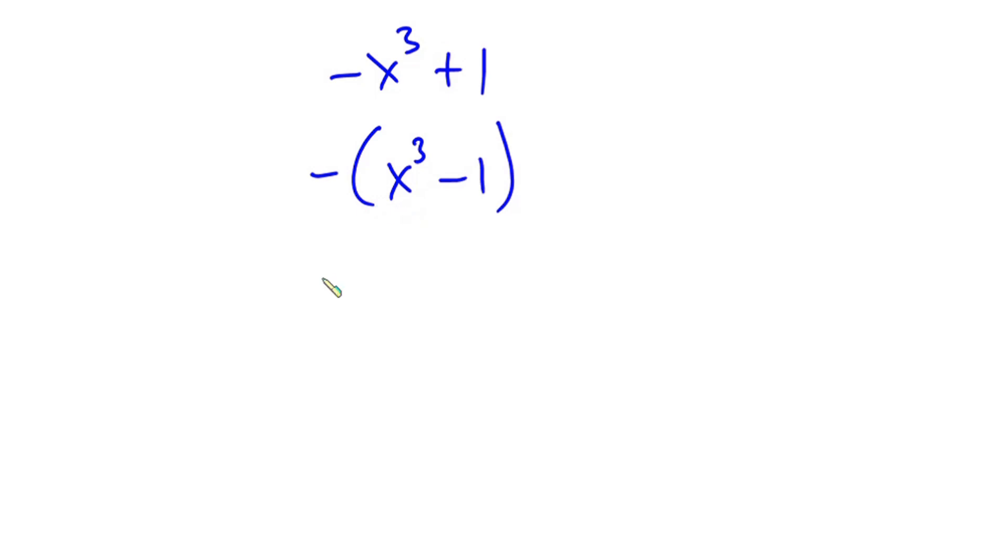Now considering what is in the bracket, we have negative into x minus 1 then times x to the second power plus x plus 1.